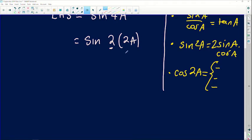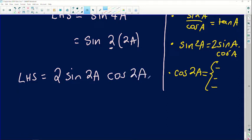But my A in this case is actually 2 times A. So it will simply be the left-hand side equals 2 sin of 2A multiplied by cos of 2A. That's actually what I have.